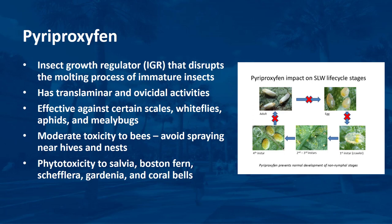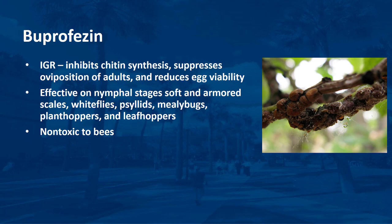Pyriproxyfen is an EPA-reduced-risk chemical that acts as an IGR disrupting the molting process of immature insects. It has translaminar and ovicidal activities. Pyriproxyfen provides very good control of certain scale insects. It also controls whiteflies and suppresses aphids and mealybugs. Pyriproxyfen has low to moderate toxicity to bees; be careful to avoid spraying or drift near honey bee hives and bumble bee nests. There should be little impact on butterflies or other beneficial insects. Phytotoxicity has been observed on salvia, Boston fern, schefflera, gardenia, and coral bells. Buprofezin is an IGR effective against nymphal stages of soft and armored scales, whiteflies, psyllids, mealybugs, plant hoppers, and leafhoppers. It works by inhibiting chitin synthesis, suppressing oviposition of adults, and reducing egg viability. It is non-toxic to bees and is not disruptive to other beneficial insects and mites.